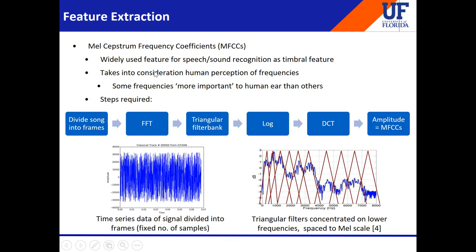Now we'll talk about feature extraction — what kind of features are we interested in from the audio files for our machine learning classifiers. The feature we considered was the Mel-frequency cepstral coefficients, also referred to as MFCCs. These are a widely used feature vector for purposes such as speech and sound recognition, and they give a good idea of the timbral features of audio signals. What differentiates MFCCs from other audio features is that MFCCs take into consideration human perception of frequency — humans perceive certain frequencies as more important than others.